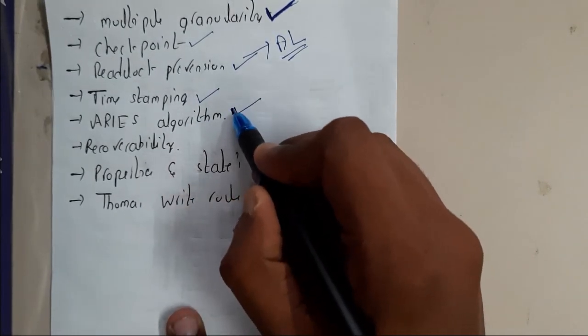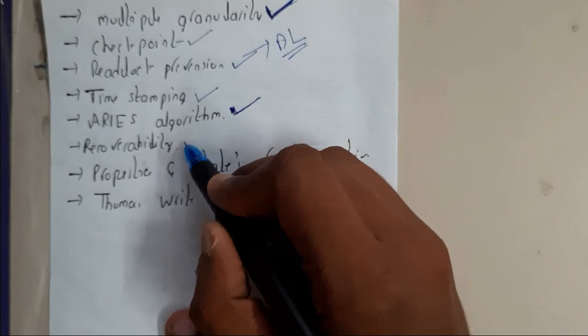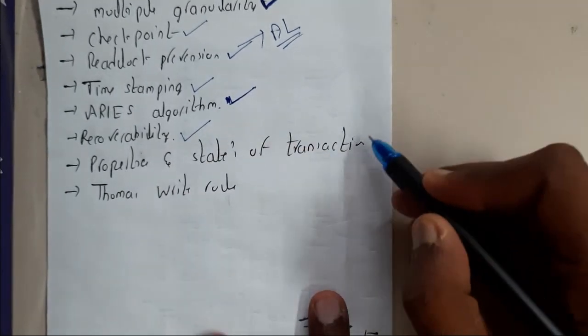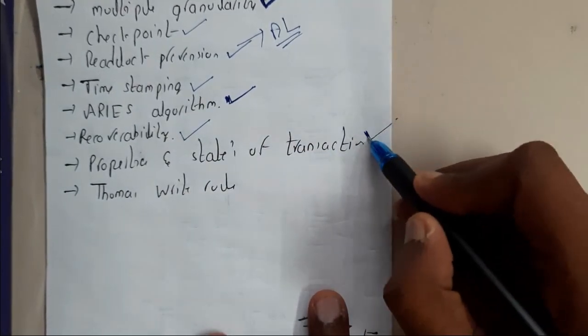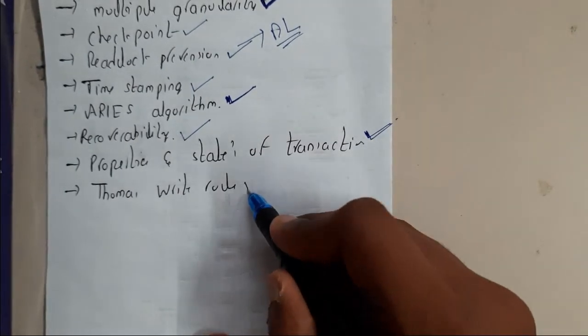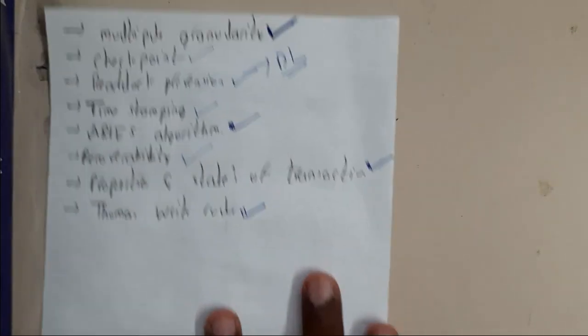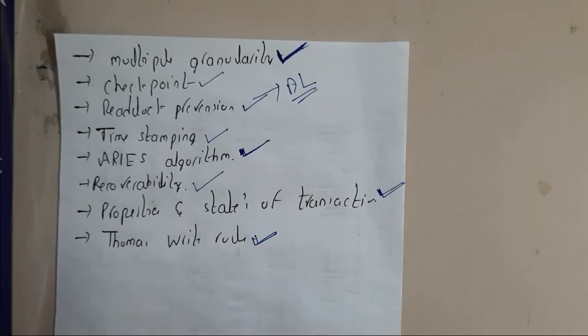I think it came around two papers out of five. And recoverability and different states of transaction and what is transaction and Thomas Write Rule. So these are the most LAQs which are repeated in the previous papers.